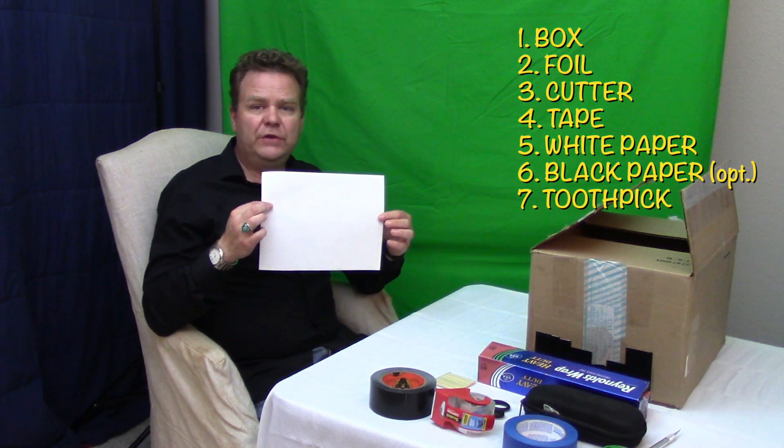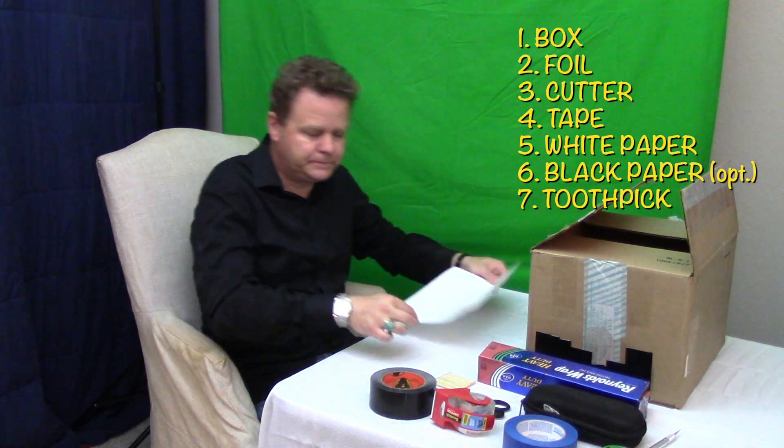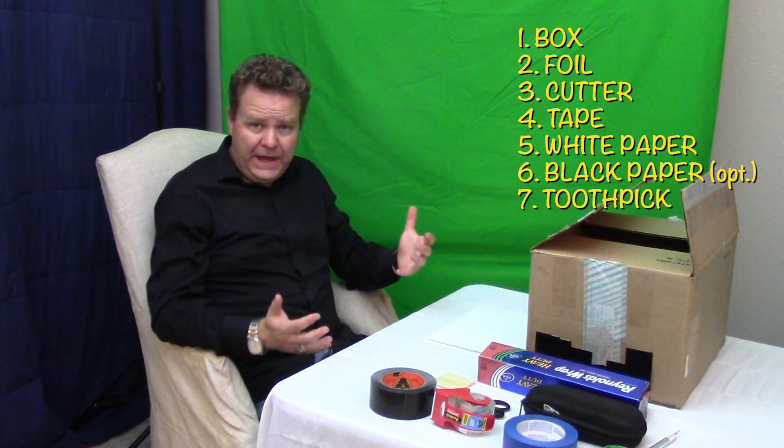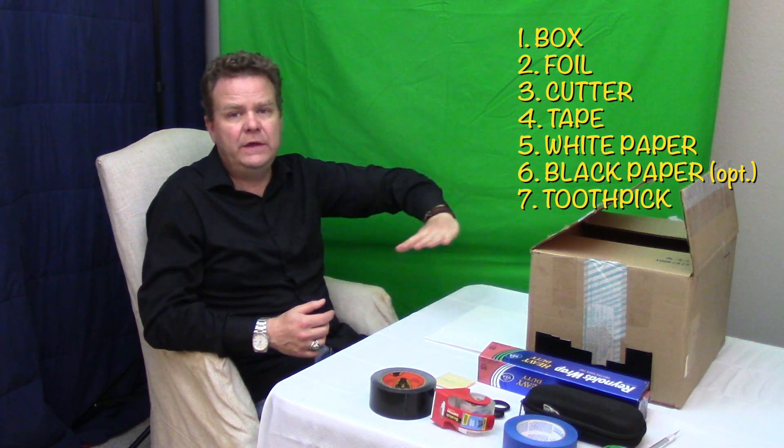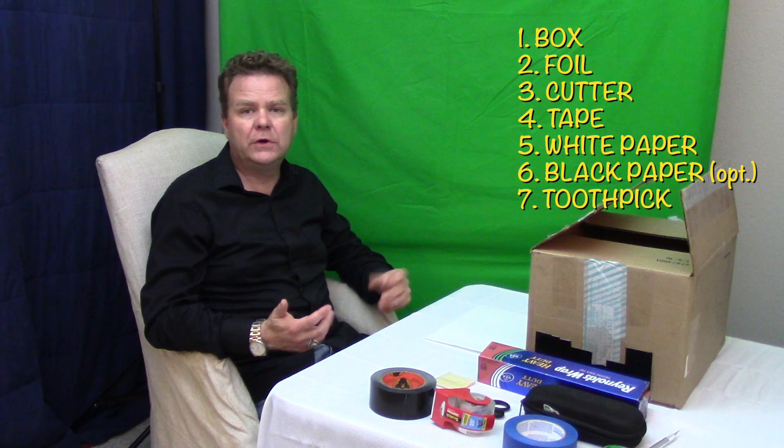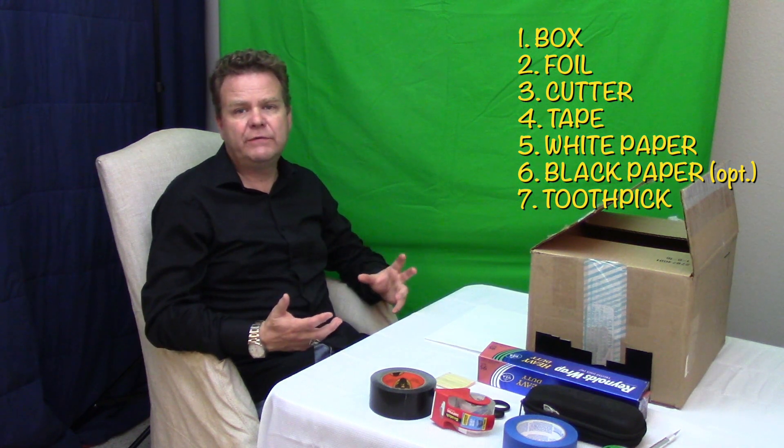You'll need a sheet of white paper. If you have some black construction paper, you could use that to line the inside of your camera obscura. That would help prevent a lot of the scattered light.